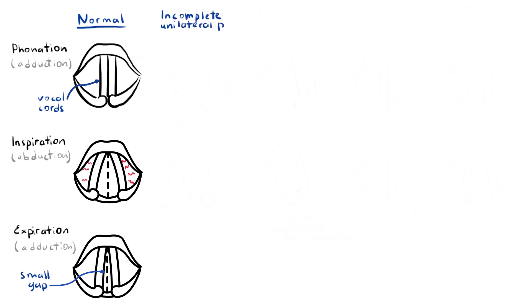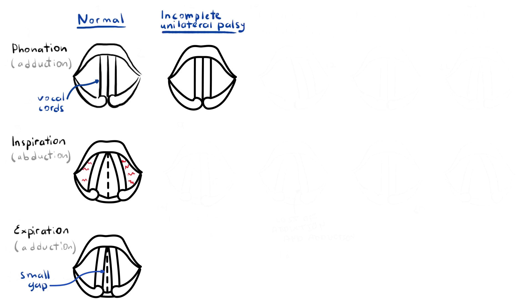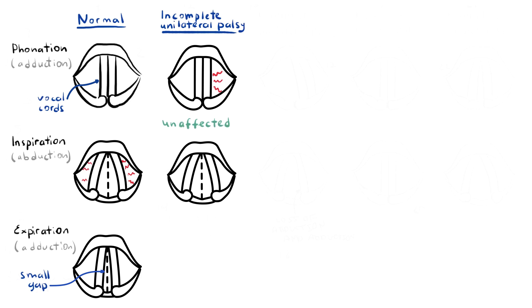Incomplete unilateral palsy — which means unilateral abductor palsy — results in both cords meeting in the midline on phonation, because the adductors, the closing fibers, can still close the vocal cords on the affected side. However, only the normal cord abducts during inspiration. For example, in unilateral right abductor palsy, the right vocal cord does not open with inspiration because the right recurrent laryngeal nerve is injured. However, on phonation, the adductor still works, so the vocal cords can close even on the affected side.